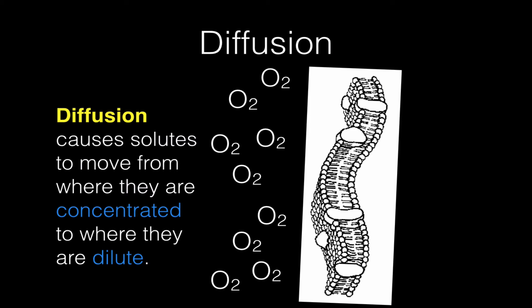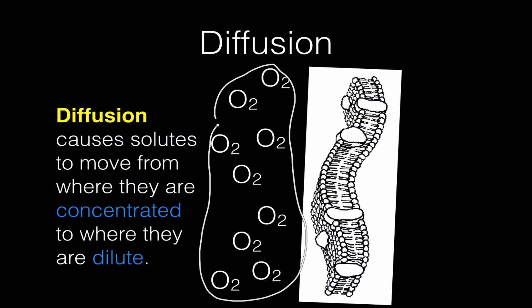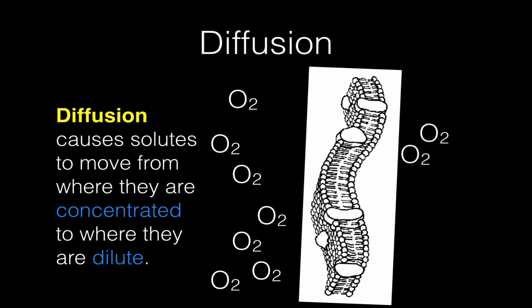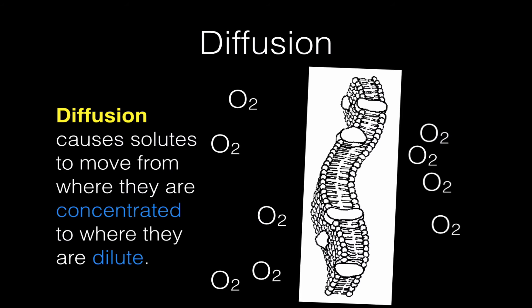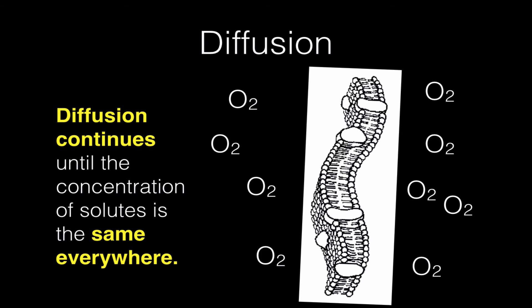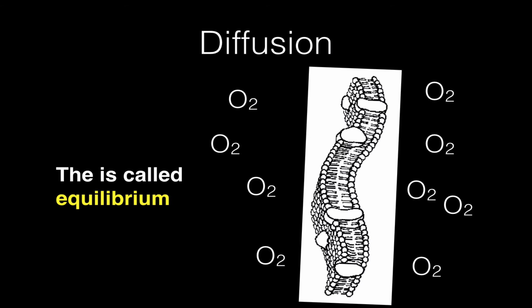Oxygen is probably one of the more familiar solutes that can dissolve in water. Diffusion causes solutes to move from where they are concentrated to where they are dilute. Concentrated means where there's a lot of them. If you look in this diagram, there is a lot of oxygen on this side of the bilayer and no oxygen on the other side. Because the concentration is really high over here and really low over there, diffusion is going to attempt to equalize it. Over time, oxygen molecules are going to diffuse across the bilayer until the concentration of oxygen is the same on both sides of the membrane. This is passive transport — it just happens; the cell does not have to pump anything. Diffusion continues until the concentration of solutes is the same everywhere, and when that happens, we've reached a state called equilibrium.